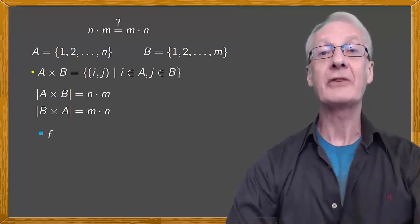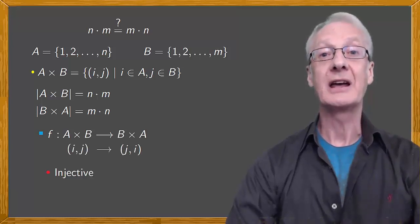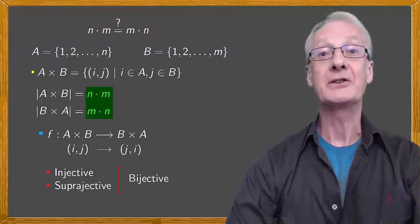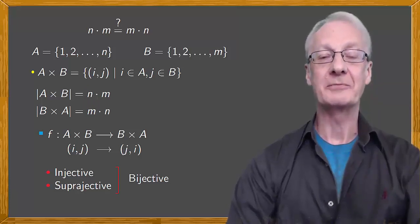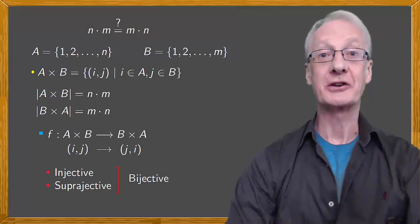The mapping of A times B onto B times A, such that every ij corresponds with ji, is both injective and surjective. In other words, there is a bijective mapping, and therefore n times m is equal to m times n. What we've done here is to formalize our original illustration. Instead of swapping rows and columns in a rectangle, we've shown a one-to-one correspondence of the elements in the Cartesian products of two sets.